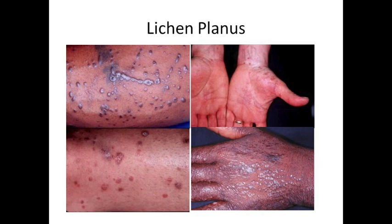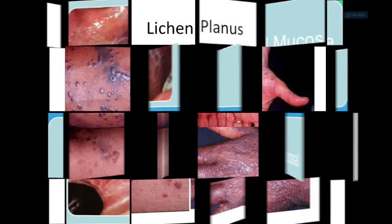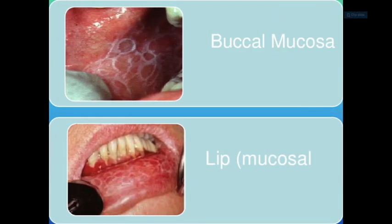Understanding the etiology helps you differentiate between lichen planus and lichenoid drug reactions, which are similar in so many clinical and histological features. When you go in depth, you realize that the etiology is what is different — lichenoid drug reactions, as the name suggests, are because of localized factors.